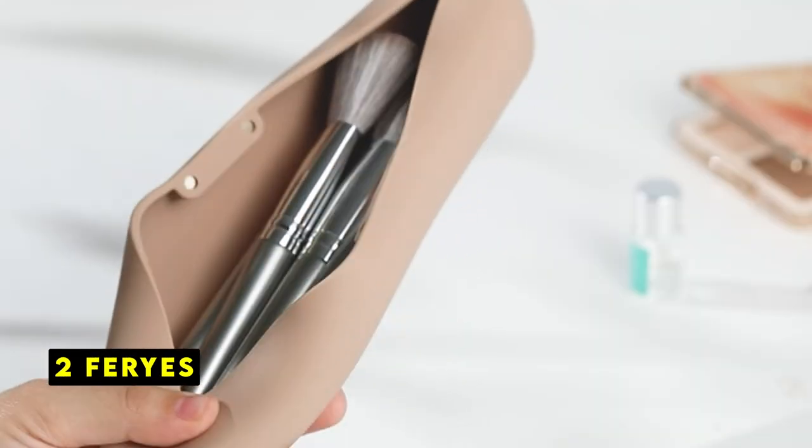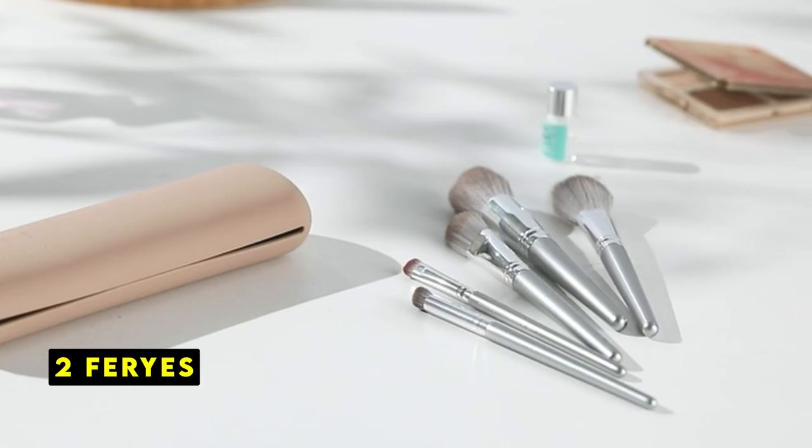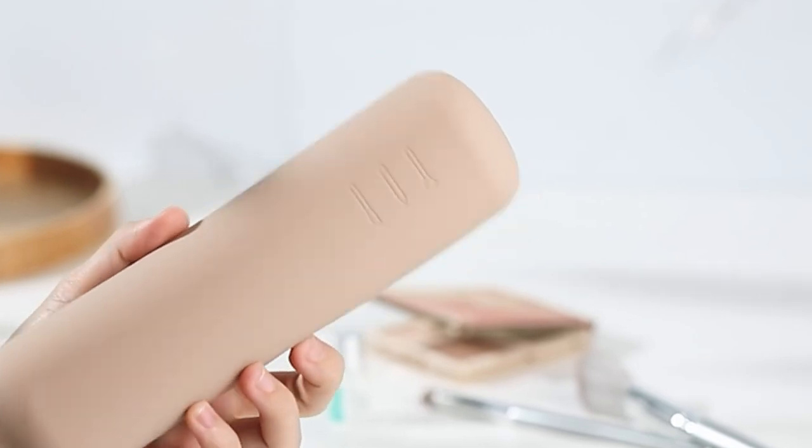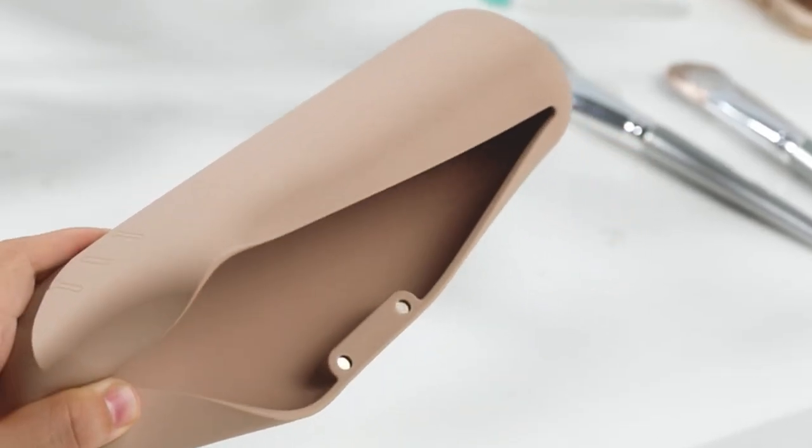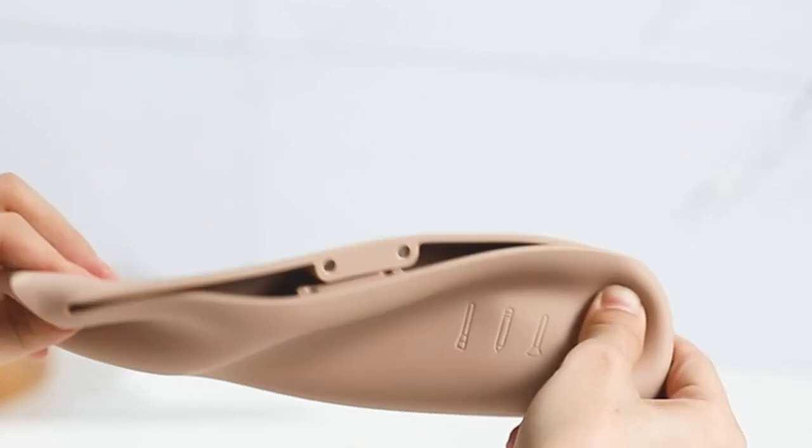At number 2 is Ferries. The Ferries silicon makeup brush holder offers a unique and practical way to store and organize your beauty tools. Its magnetic closure design is lightweight, compact, and spacious, making it ideal for both travel and everyday use.